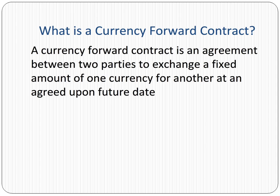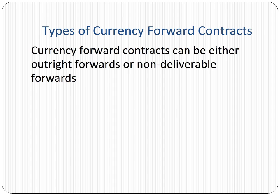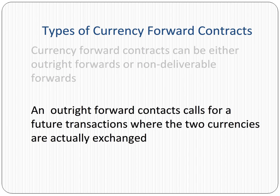A currency forward contract is an agreement between two parties to exchange a fixed amount of one currency for another at an agreed upon future date. The exchange rate for the future deliveries is fixed in advance at the time of signing the agreement. Currency forward contracts can be either outright forwards or non-deliverable forwards.